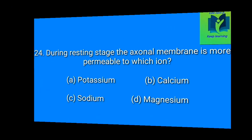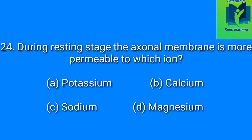During resting stage, the axonal membrane is more permeable to which ion? Option A: potassium. Option B: calcium. Option C: sodium. Option D: magnesium. Answer: potassium.